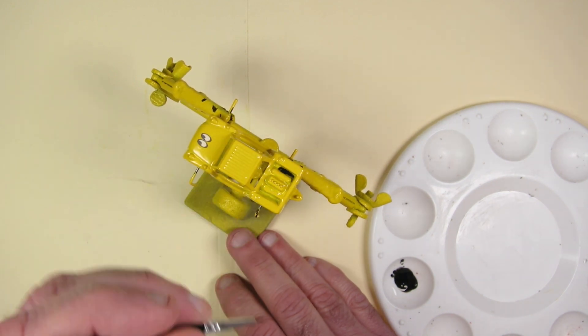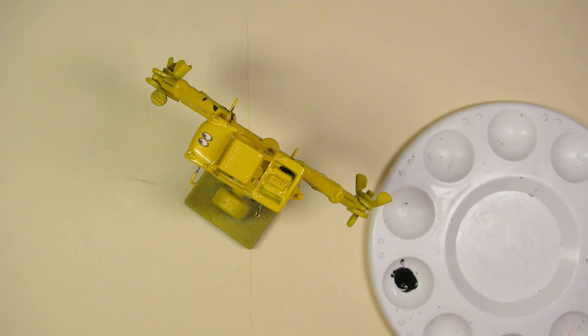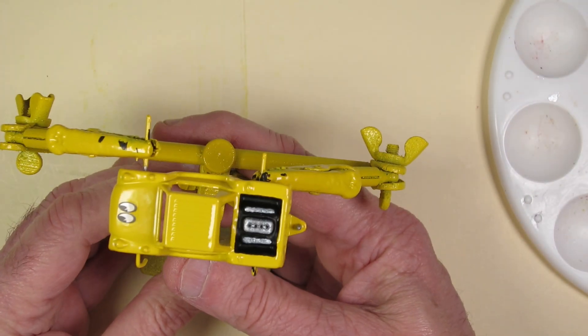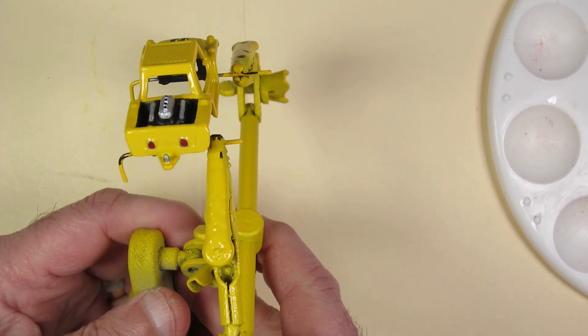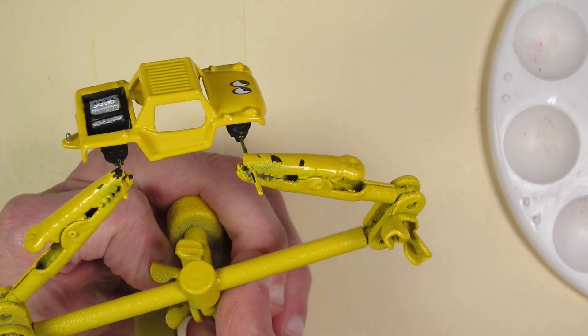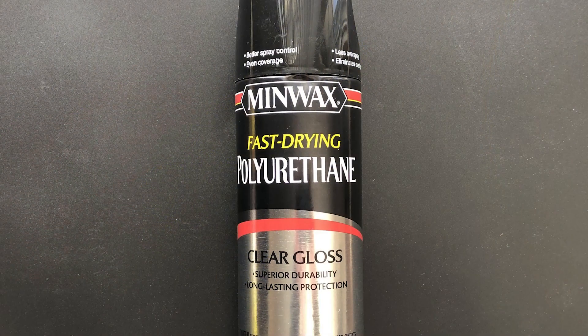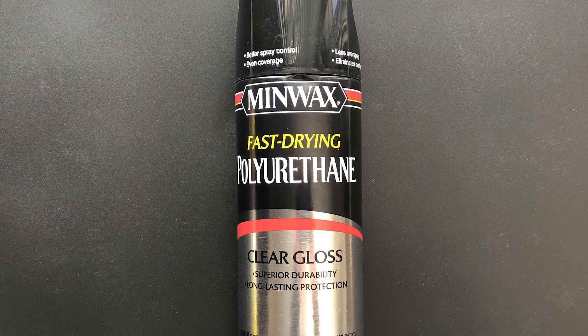So I did paint in some detail in the back. I didn't get too carried away in the engine compartment. Just a tiny bit, did taillights, painted the hitch chrome, did spot headlights on there. Then I hit it with the clear gloss minwax, fast drying poly.